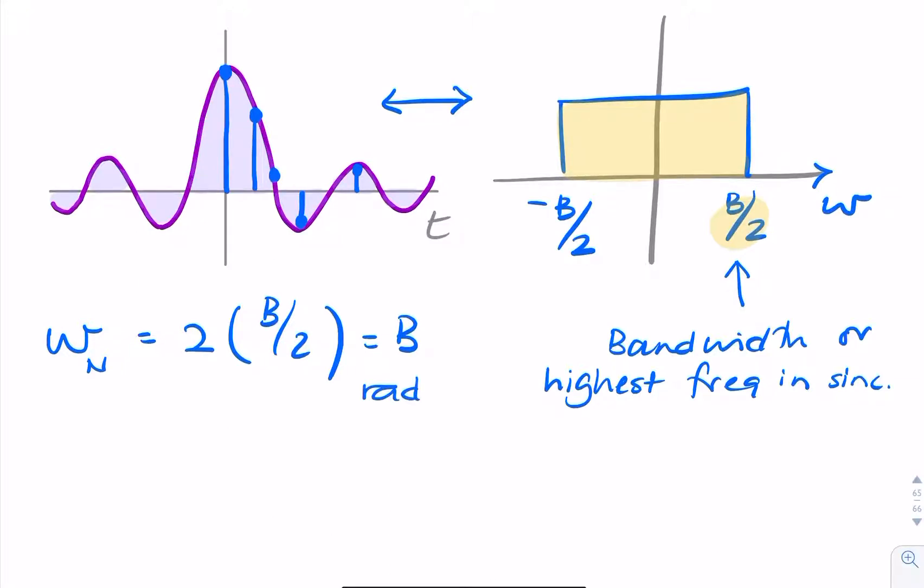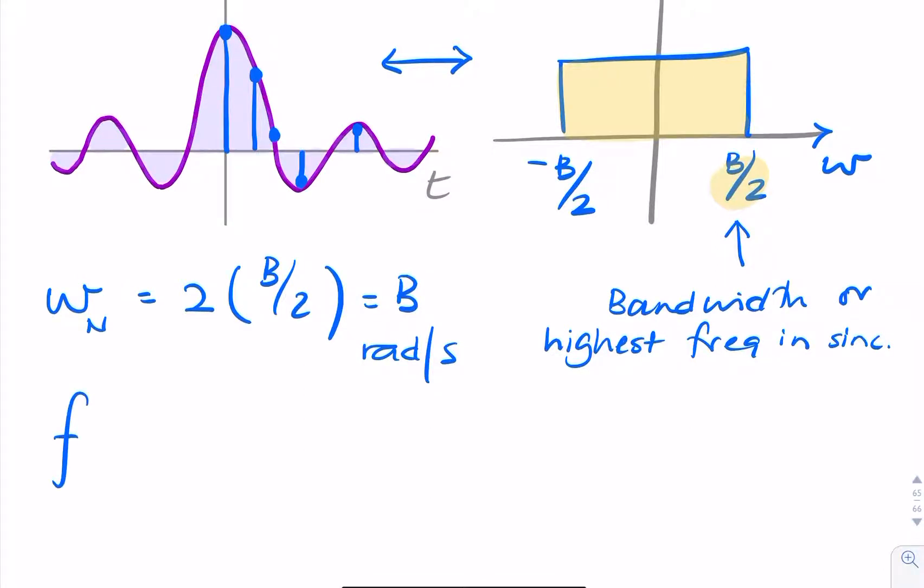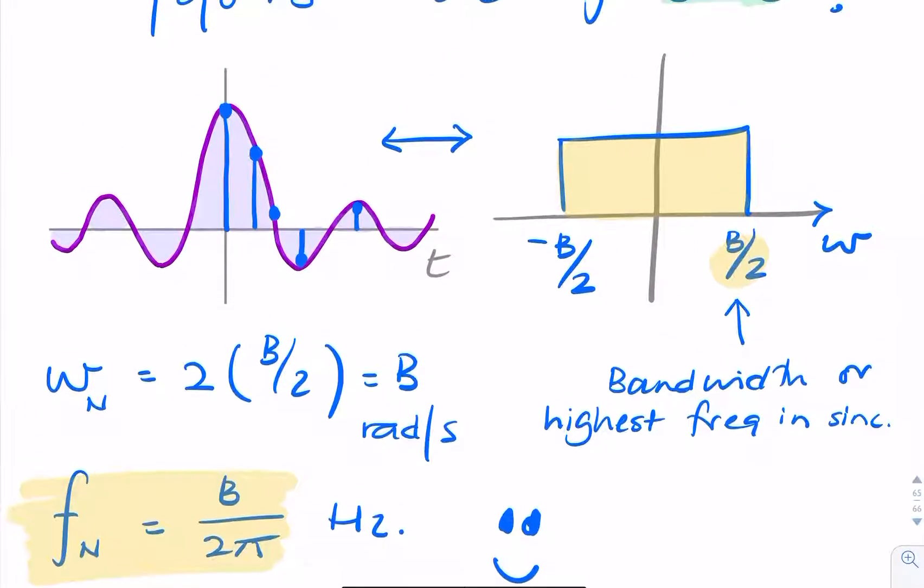And that will be in radians per second. So to find the Nyquist rate in hertz, that would be B divided by 2π, and that will be in hertz. So there you have your final answer. That's the Nyquist rate of a SYNC function.